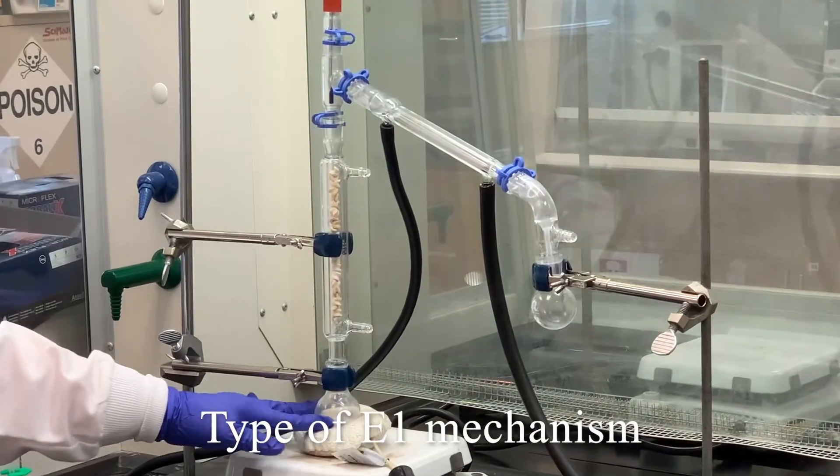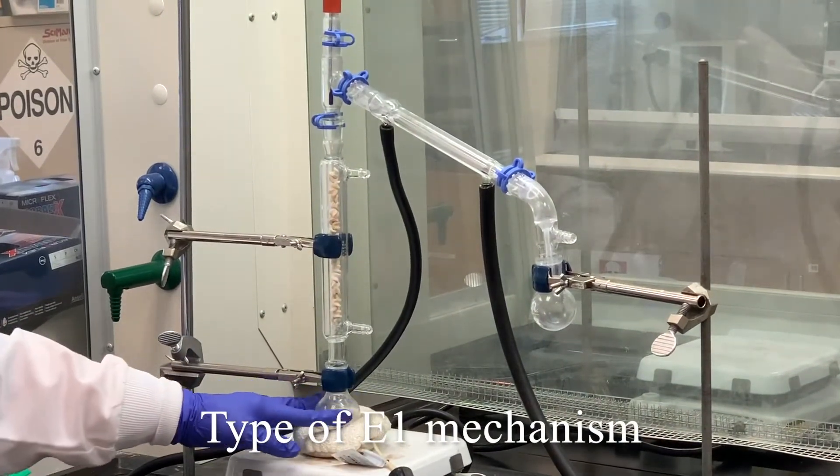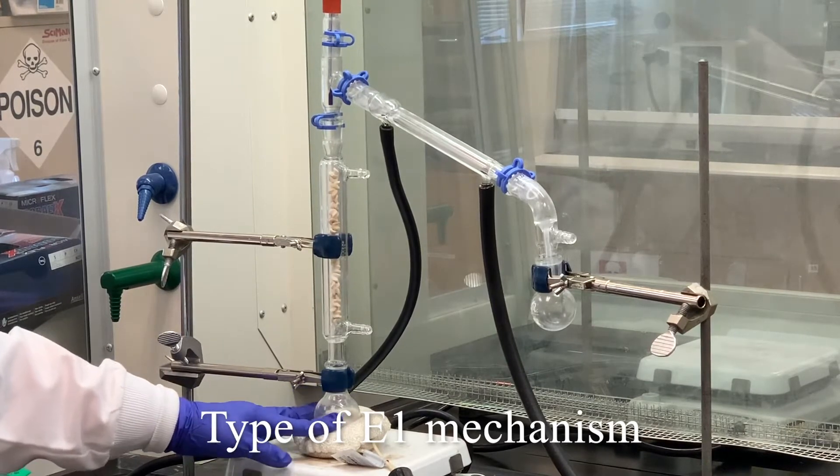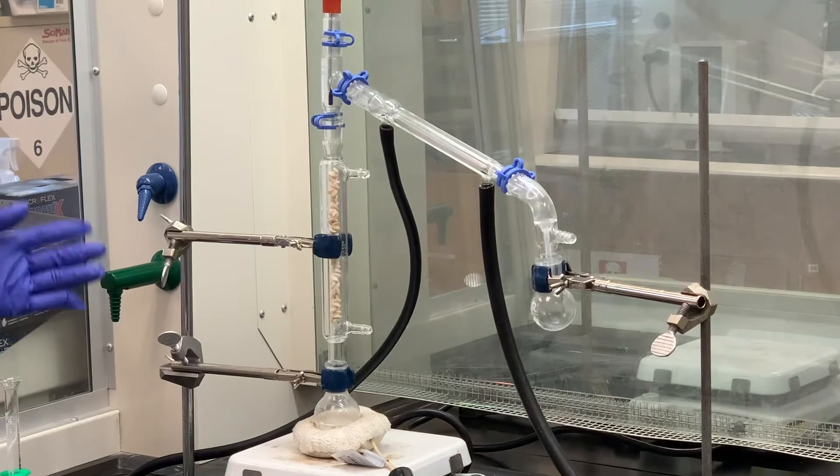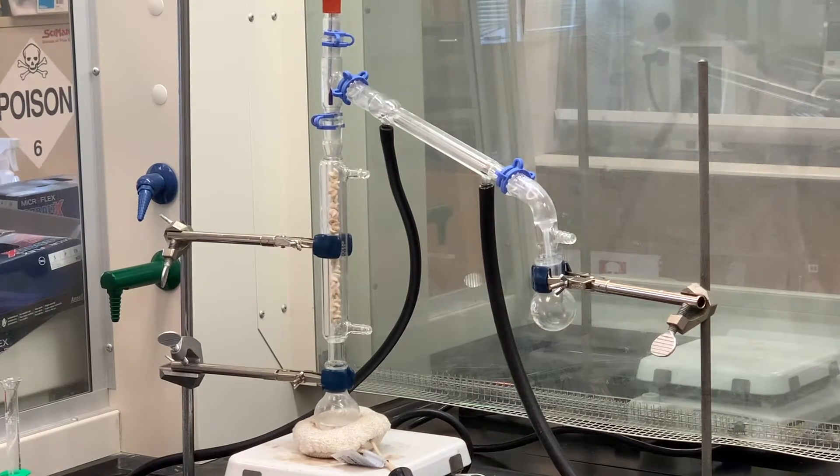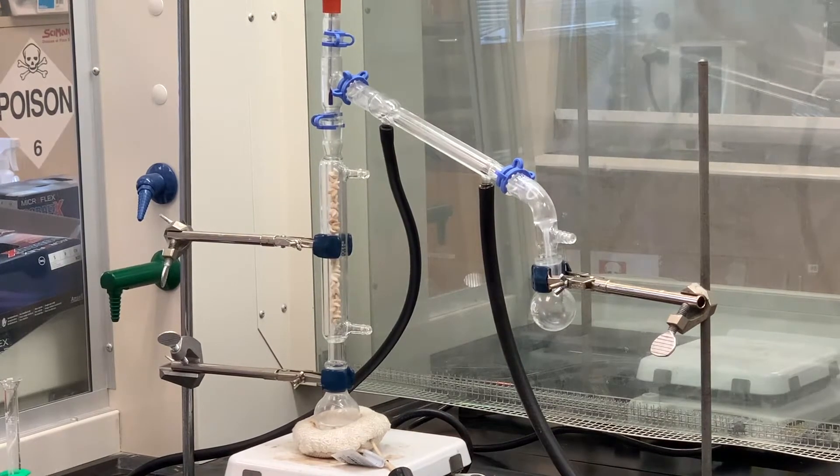So we're going to turn the heating mantle on in just a second, but I have a mixture of the cyclohexanol and the non-molar sulfuric acid. And what happens during that mechanism is that the OH group of the cyclohexanol is protonated. That becomes a good leaving group. It will leave and form a carbocation.